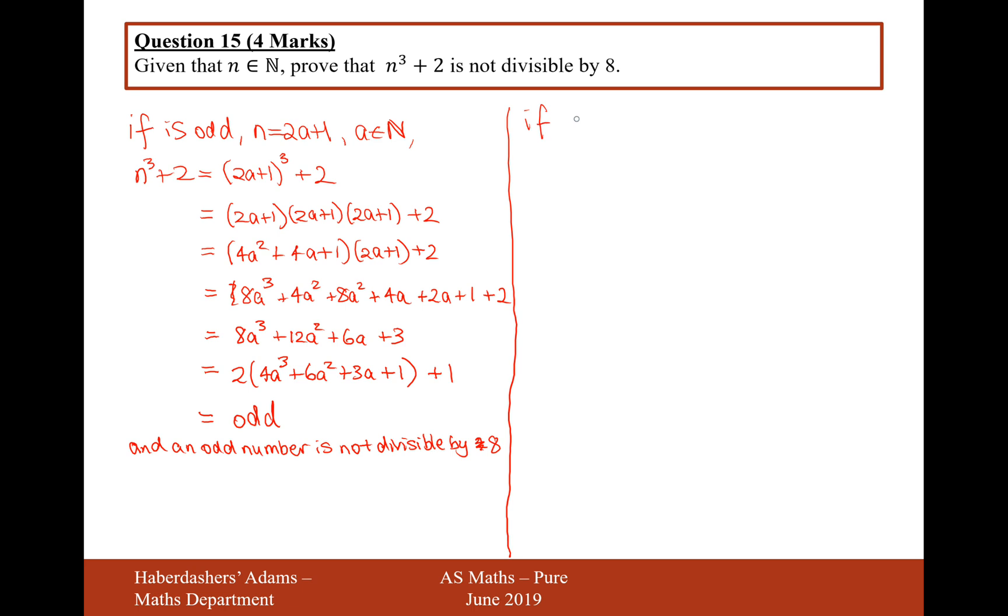Let's now do if n is even. If n is even, then it can be represented as 2a. We might have to do a different approach here. We'll have 2a cubed plus 2. When we expand this, we're going to get 8a cubed plus 2.